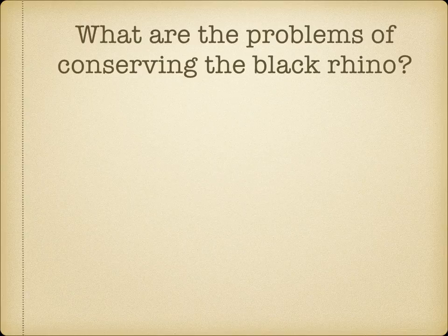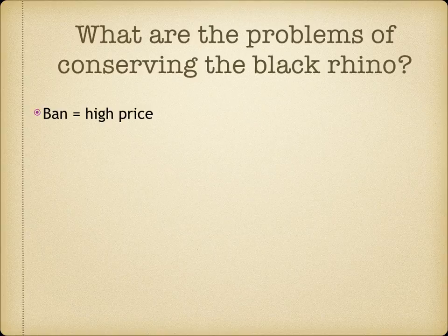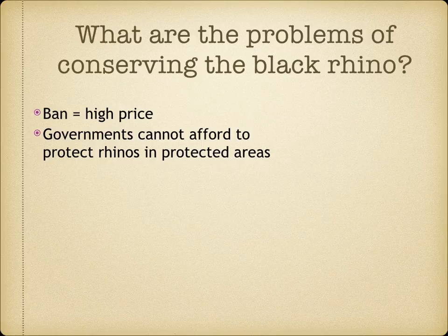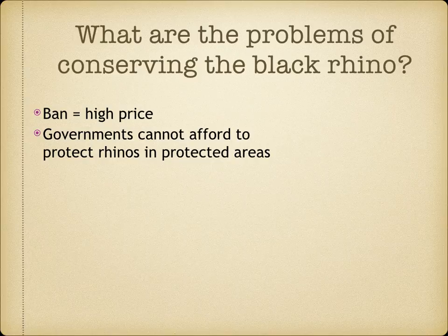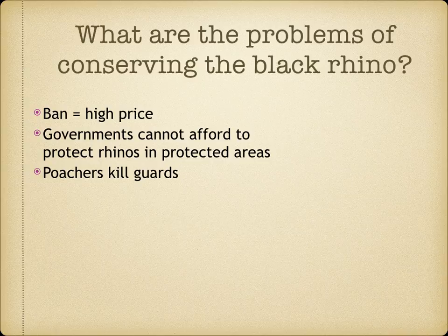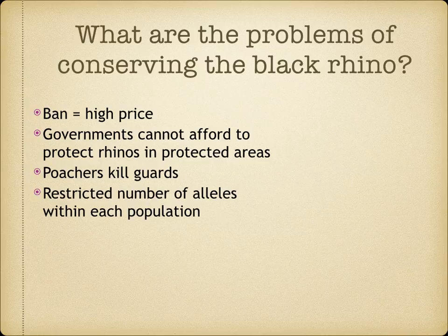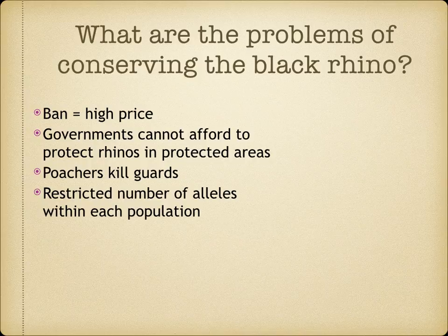What are the problems of conserving the black rhino? Although conservation measures are in place, there are still difficulties to overcome. The ban on trade in rhino horns has actually increased the price of horns on the black market. Governments cannot afford to protect rhinos in protected areas, so rhinos are still being killed. Poachers kill the guards that protect the rhinos due to the high value of the rhino horn. There are also about 75 separate populations of black rhino, which are small and widely separated, resulting in a restricted number of alleles within each population.